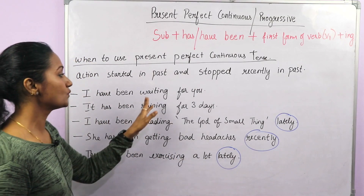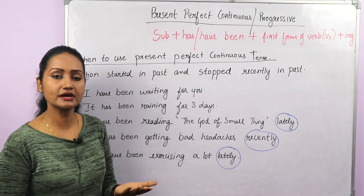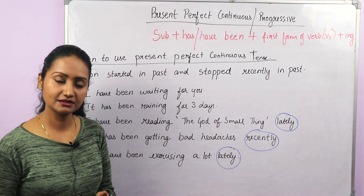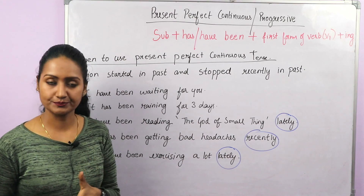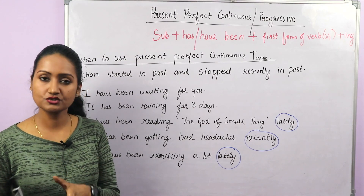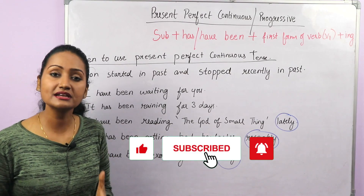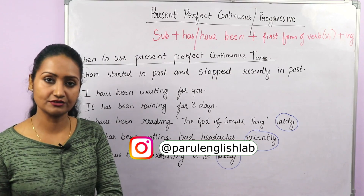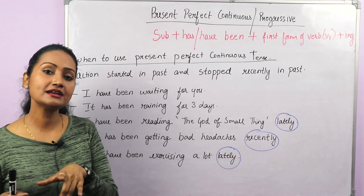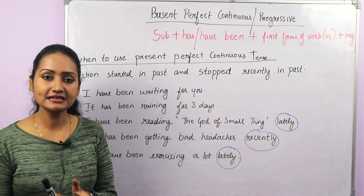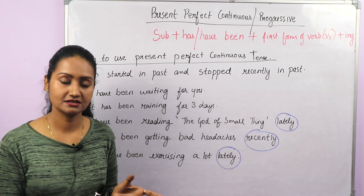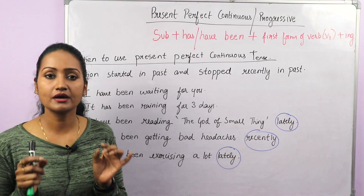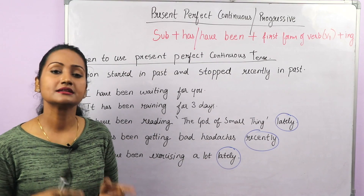Another example: 'I have been waiting for you.' Imagine you and your friend agreed to meet at 10 o'clock. You arrive at 9:30 but your friend doesn't turn up until 11. When they arrive you say, 'Where were you? I have been waiting for you.' You started waiting at 9:30, the action continued till 11, and it stopped when your friend came. You are not waiting right now — the action stopped in recent past — but still you frame the sentence as 'I have been waiting for you.'